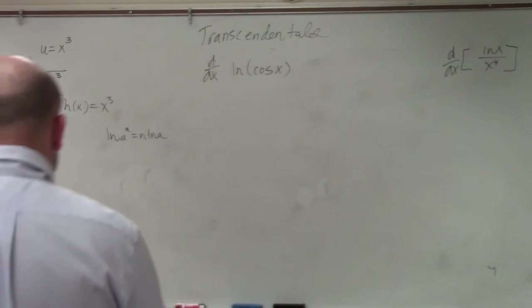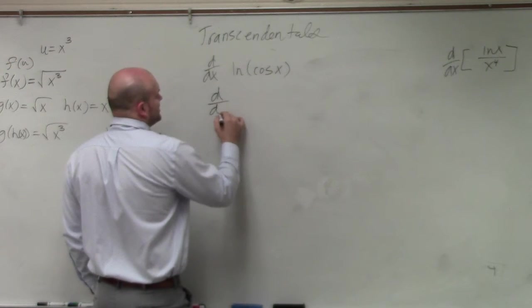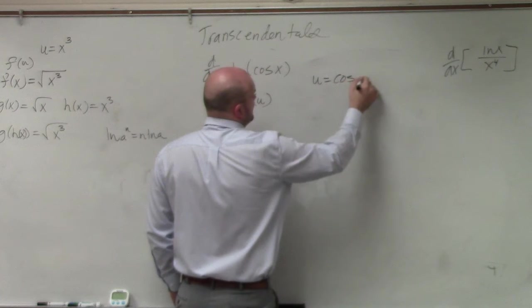Real quick, with this logarithmic one, I basically see that I am taking d over dx of ln of u, where I can say u is equal to cosine of x.